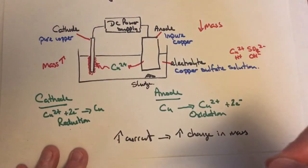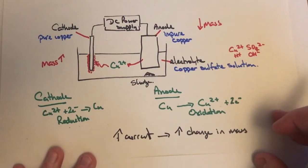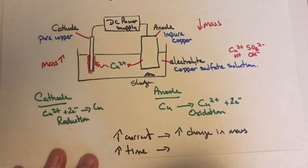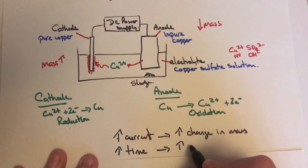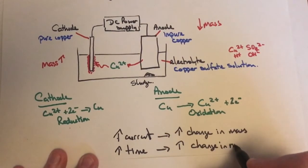The second thing is increasing the time. If it runs for longer, the change in mass increases—the anode mass will drop by more and the cathode mass will increase by a greater amount.